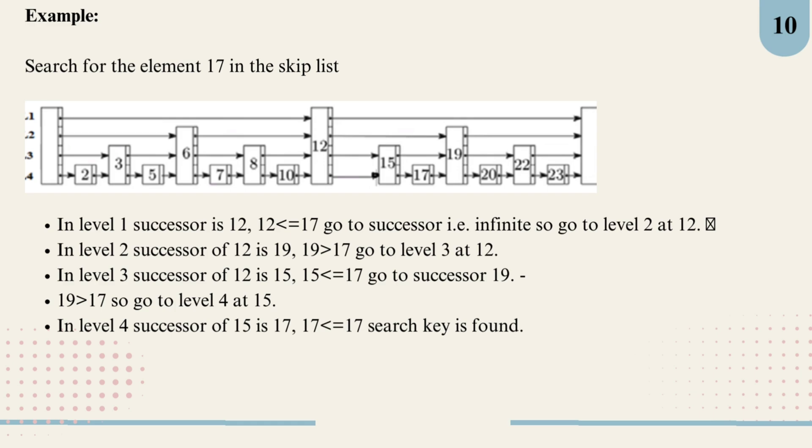Finally, the successor of 15 is 17, which matches our search key. 17 is found. This layered approach shows how skip list can efficiently locate elements by skipping over sections, making it much faster than a regular linked list.